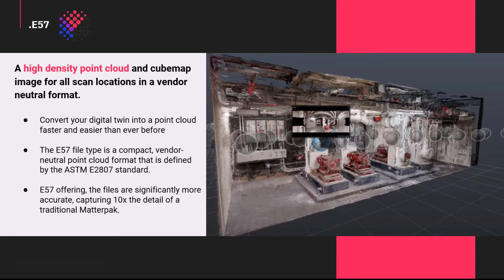If you need more detail than what you get in a MatterPak, you can download a high-density E57 point cloud file. This is a large file full of details, and it's application agnostic — meaning you can import it to a wide range of CAD applications such as Revit, AutoCAD, and BricsCAD.